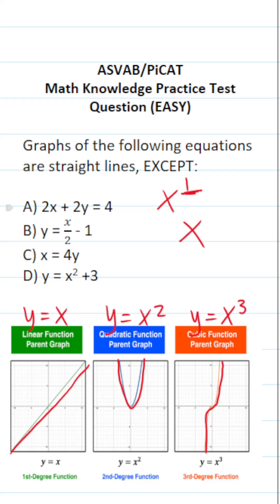So let's look at answer choice A. We can see that this is 2x to the first power, so this is a line. This is x divided by 2, x is to the first power, so this is a line. This is x equals 4y, x is to the first power, so this is a line.